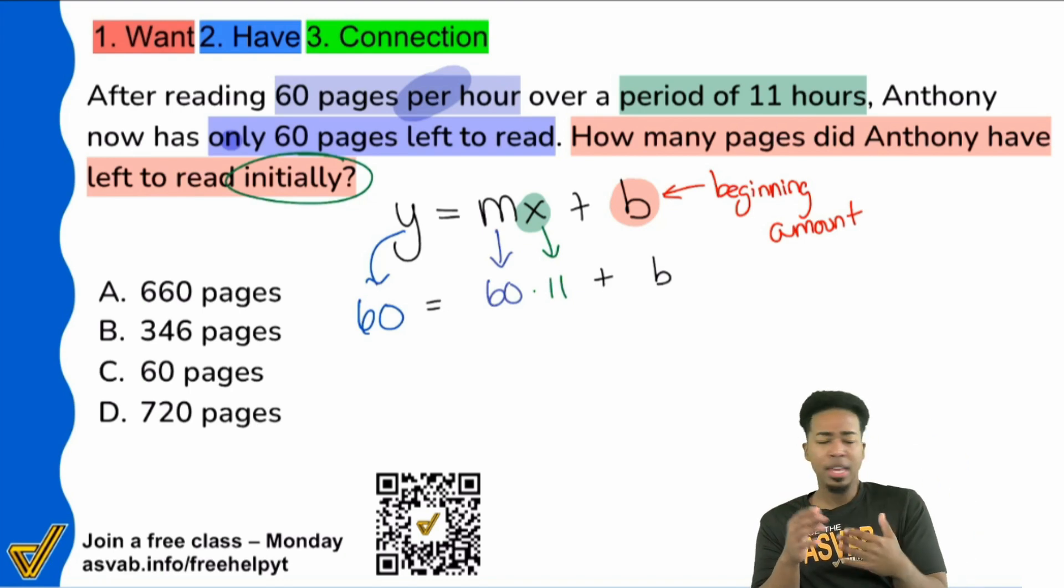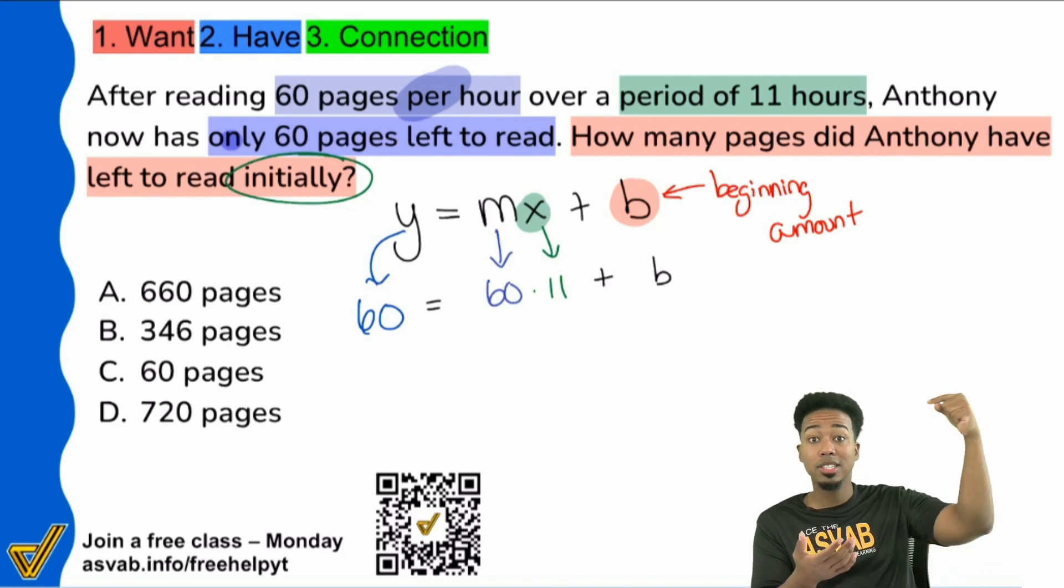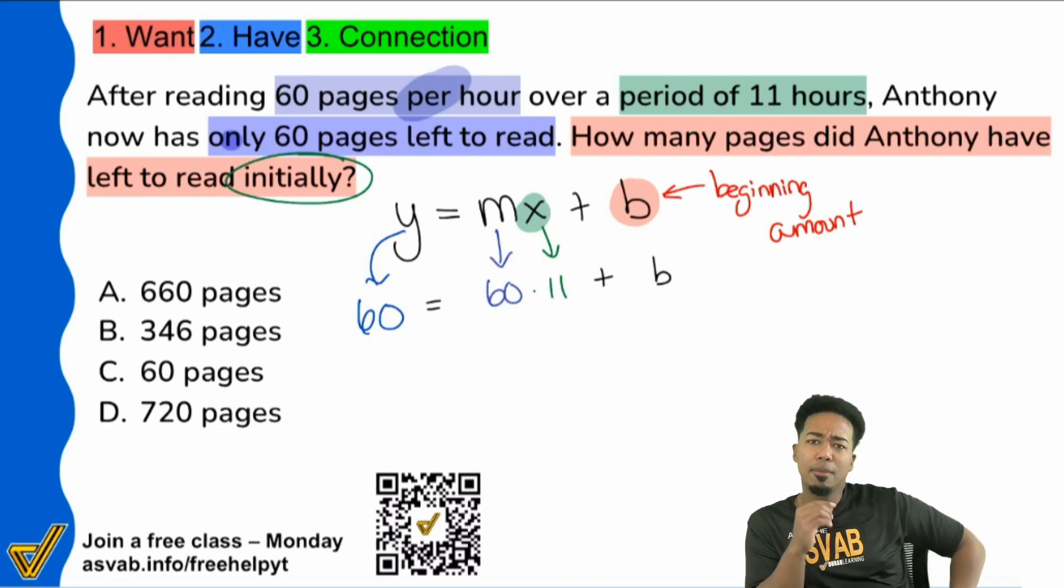Because think about it, if at the beginning of our study session we have 100 pages left to read, and then we're reading, then we have 90 left, then 85 left, then 81, then 76. The number of pages that we have left is going to continuously go down as we continue reading.